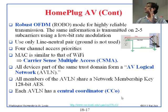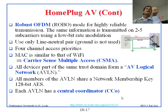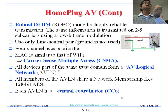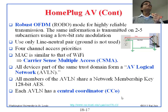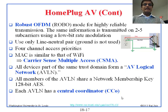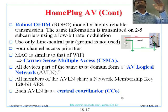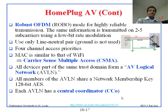In HomePlug AV, they use only one pair. There are three wires in your plug: ground, line, and neutral. They just use line and neutral, not the ground. There are four channel access priorities, and traffic is divided into priorities zero, one, two, and three — highest priority goes first. MAC is similar to that of Wi-Fi — carrier sense multiple access, meaning you look at the wire, if somebody else is transmitting you don't transmit.